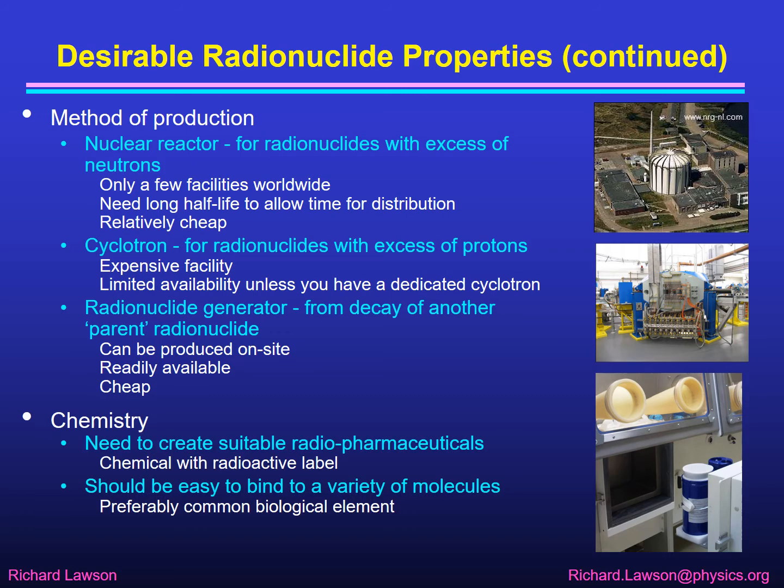We also need to think about the chemistry of our radionuclide. What we aim to do is to use the radionuclide to produce what we call radiopharmaceuticals — a chemical which goes into the part of the body that we're interested in, labelled with a radioactive label which is our radionuclide. So we need a radionuclide that will easily bind to a variety of different molecules. Preferably we want something that's common in biology: carbon, nitrogen, oxygen, things like that.